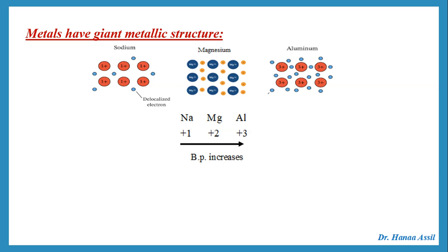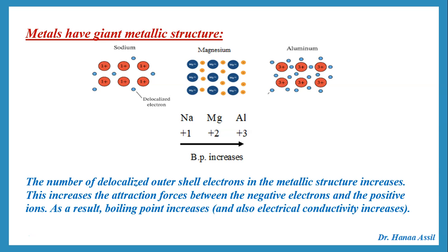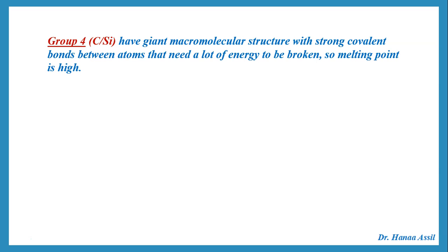Going from sodium, magnesium, aluminium, the boiling point increases. This is because the number of delocalized outer shell electrons in the metallic structure increases. This means increased attraction forces between the negative delocalized electrons and the positive ions. As a result, the boiling point increases, and also the electrical conductivity would increase.